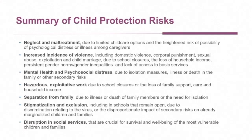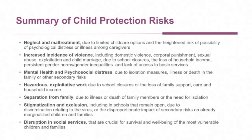Child protection risks themselves are plenty. There is evidence from other similar epidemics — none of them at the scale of COVID-19 — but evidence from Ebola, SARS, and cholera suggests multiple child protection risks emerge in situations like this. Neglect and maltreatment go up. We are already seeing reports of severe maltreatment and abuse of children. Domestic violence has started increasing in most societies — not just places with typically high levels of violence, but also places that don't necessarily have high levels of violence or child abuse. Even there, we are seeing an increase.